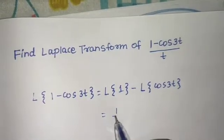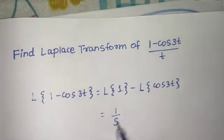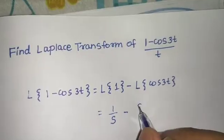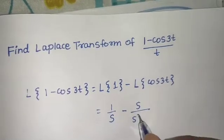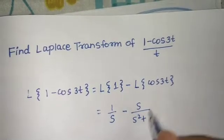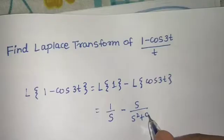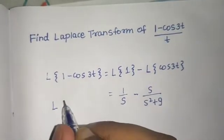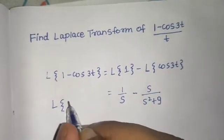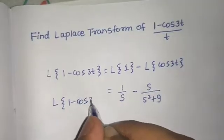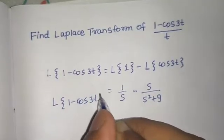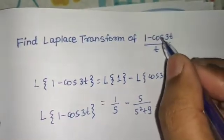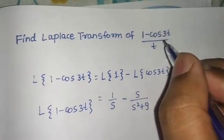Laplace of 1 is 1/s, and that of cos(3t) is s divided by s² plus a². Here a is 3, so a² is 9. Now this is the Laplace of (1 minus cos 3t), but we want the Laplace of (1 minus cos 3t) divided by t.